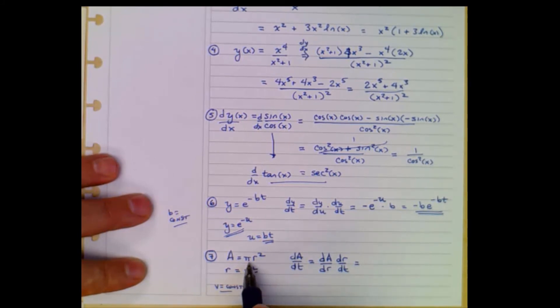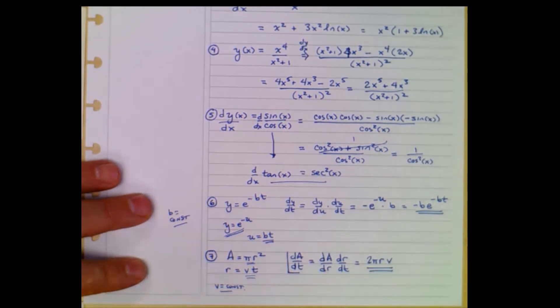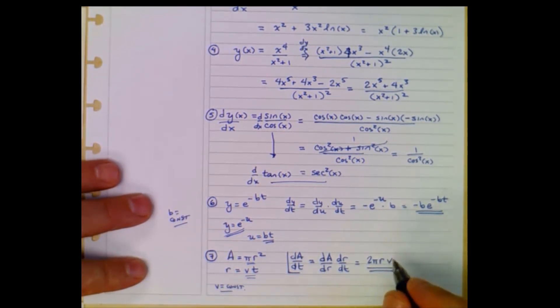So this is dA dr times dr dt. Well, dA dr, I've got a constant times r squared. So dA dr is going to be 2 pi r. That's interesting enough. That's the circumference, in fact. It's going to be 2 pi r times the derivative of r with respect to t, which is just v. So the area is growing or shrinking, if v is negative, as the circumference times the velocity of the end of the radial vector as it goes out. That's kind of neat.